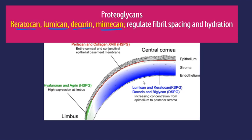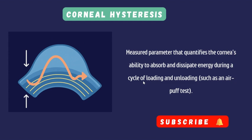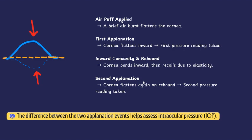Corneal hysteresis is a way to measure the viscoelastic function of the cornea. It's a clinical measurement capturing the combined effect of both viscous and elastic properties during deformation, and is used as a biomarker for corneal biomechanical health. It's defined as the difference in pressure between the inward and outward applanation of the cornea during an air puff test, typically measured using an ocular response analyzer. The cornea is exposed to a brief air burst that flattens it, and the first pressure reading is recorded at that point of flattening.